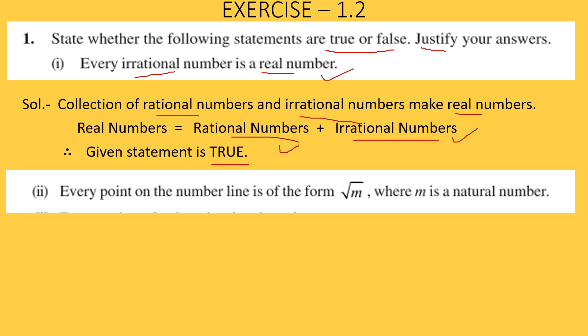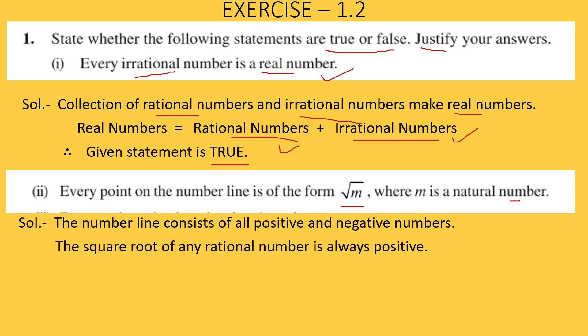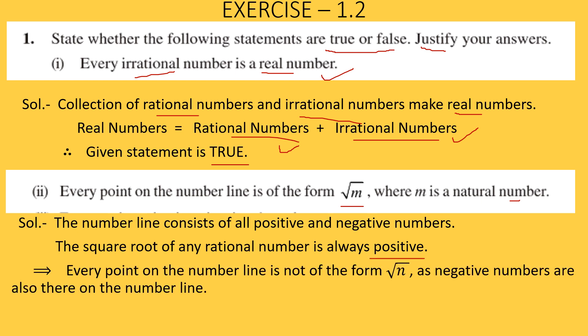The second statement is: every point on the number line is of the form √m, where m is a natural number. The number line consists of 0, all positive numbers to the right, and all negative numbers to the left. The square root of any natural number is always positive. So every point on the number line cannot be of the form √m, because negative numbers are also present. Therefore this statement is false.